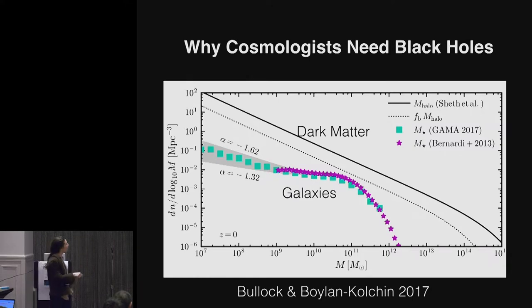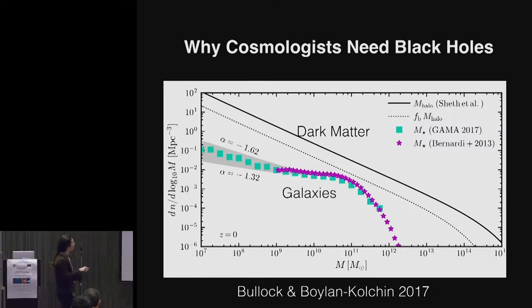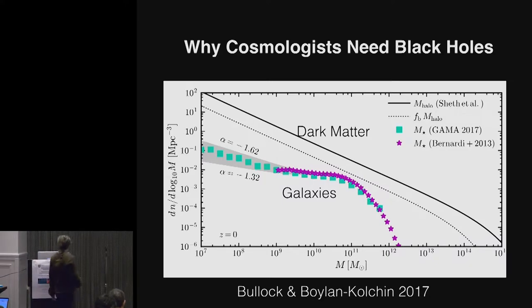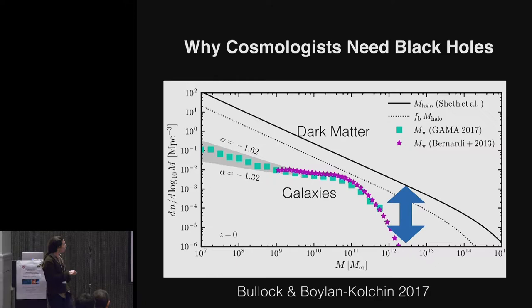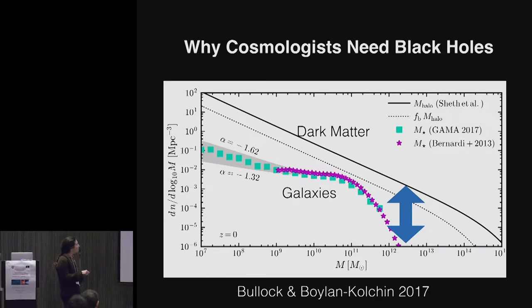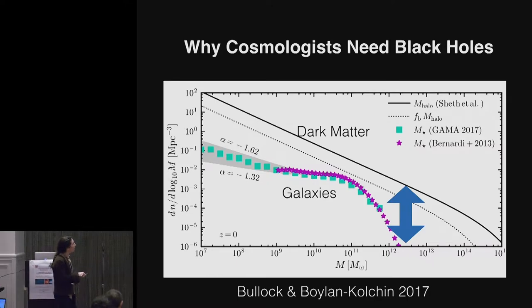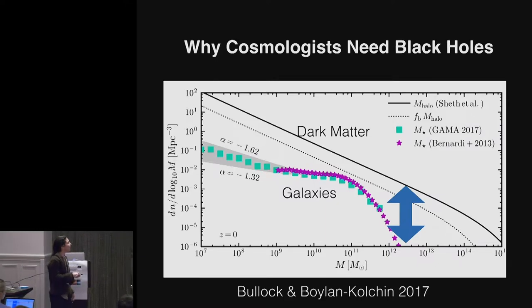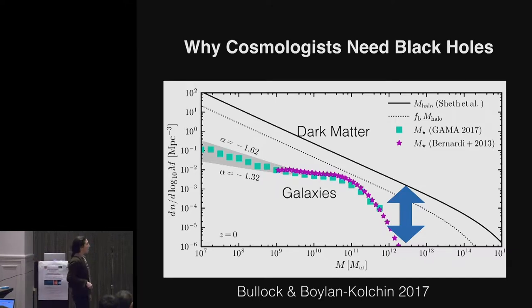That comes out of cosmological simulations as compared to the luminosity function or mass function that we observe for galaxies. And what you can see is that there's a really large discrepancy in the number of very massive galaxies compared to the number of very massive dark matter halos. So something is suppressing the efficiency of galaxy formation at very high masses.